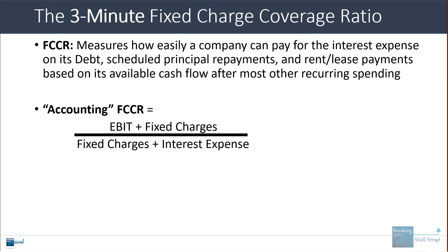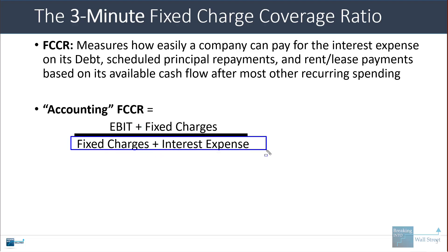One definition online is what I call the accounting-based FCCR, which equals EBIT or operating income plus the company's fixed charges — which normally include rental and lease payments, but could potentially include other things. You divide that by those same fixed charges plus the interest expense. EBIT is before interest, so this measures how well a company can cover the interest expense on its income statement with other line items on its income statement.